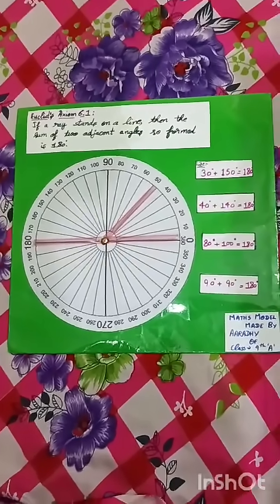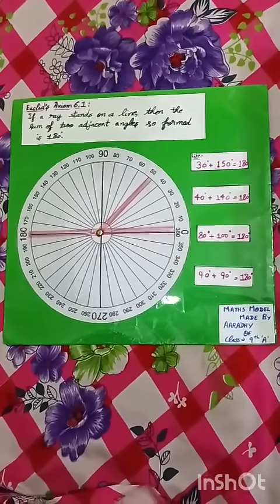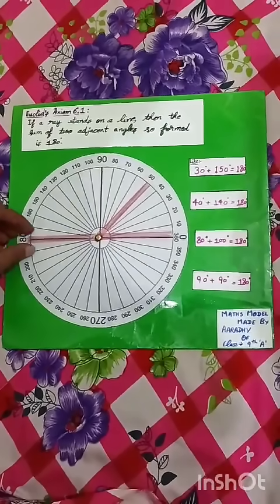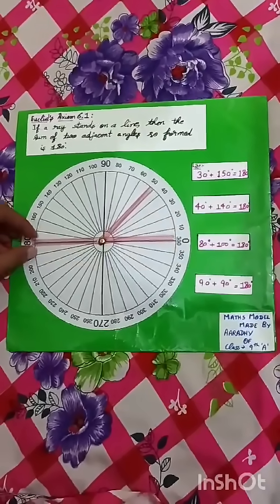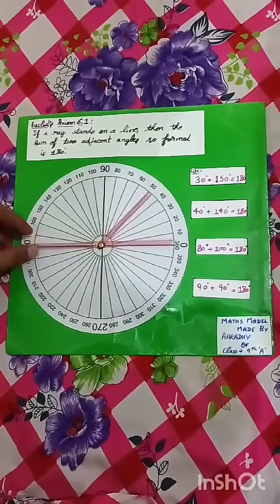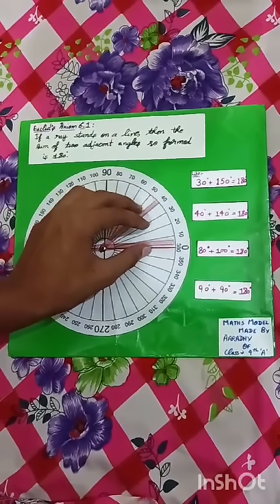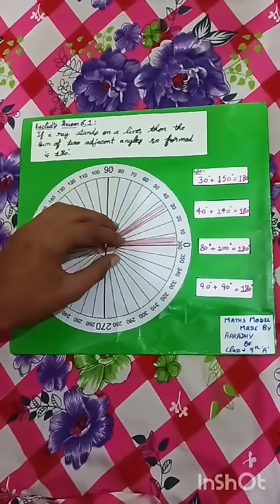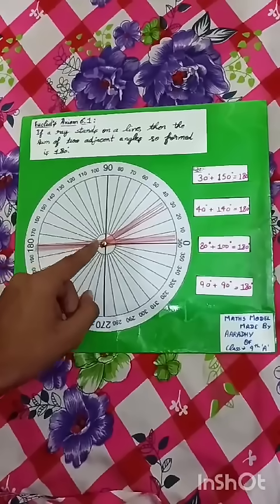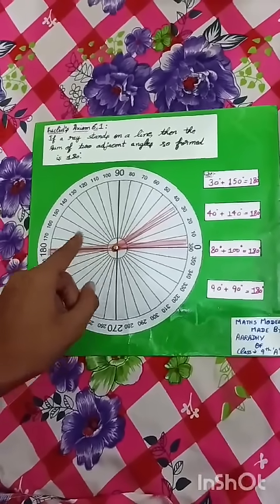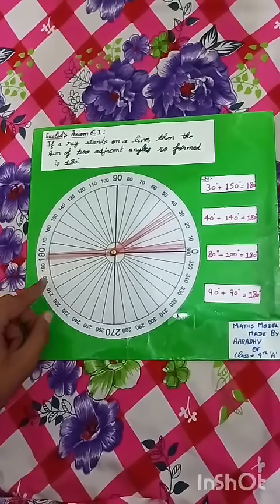Now I will show this to you practically. I put the larger straw on 180 degrees and the smaller straw on 30 degrees. So this angle will be 30 degrees and this angle will be 150 degrees, and the total of these two angles is 180 degrees.